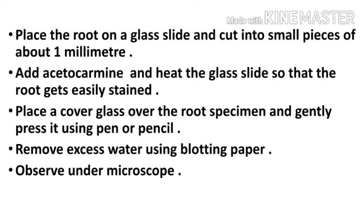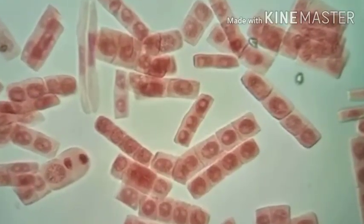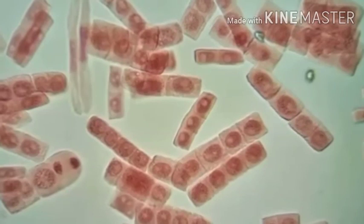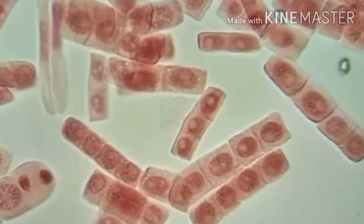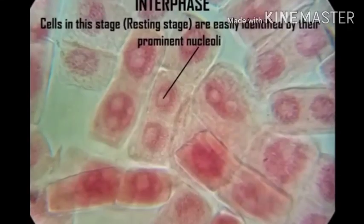Add Acetocarmine stain and heat the glass slide so that the root gets easily stained. Place a cover glass over the root specimen and gently press it using a pen or pencil. Remove the excess water or stain using blotting paper. Observe under the microscope. You can see the images of different stages of mitosis using a 40x lens and 100x lens.